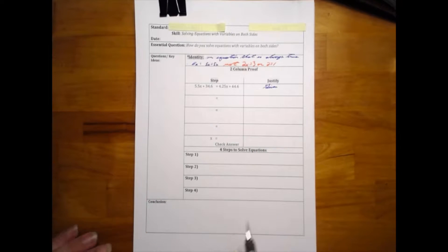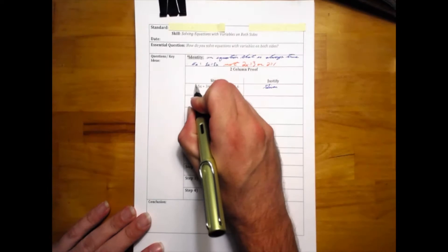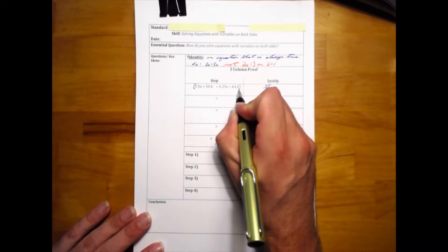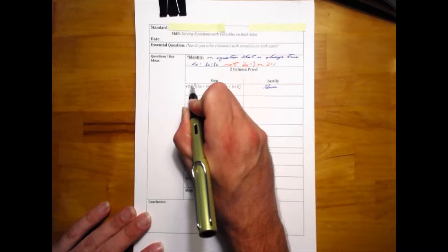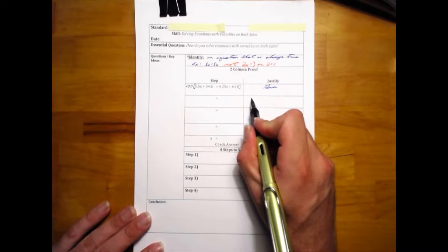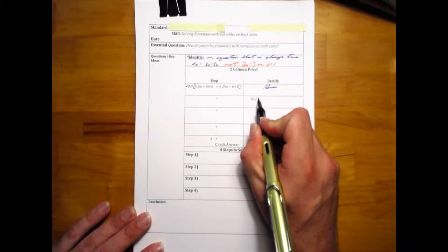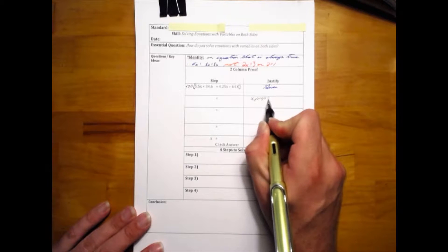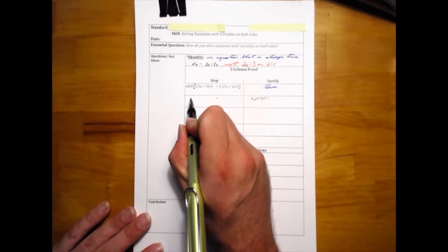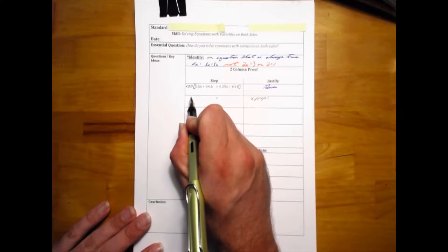this first problem. This is a given statement. To get rid of decimals, we're going to multiply the entire equation by 100, which is the multiplication property of equality. By distributing out this 100, our new